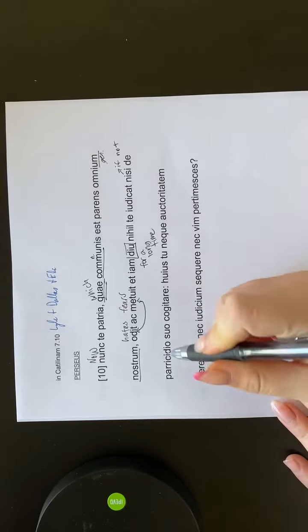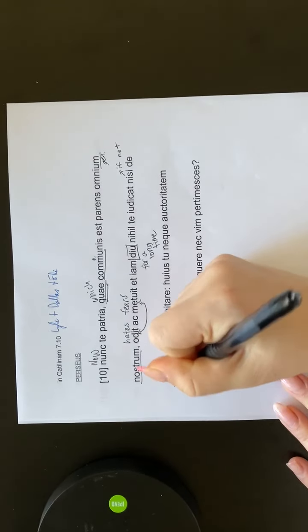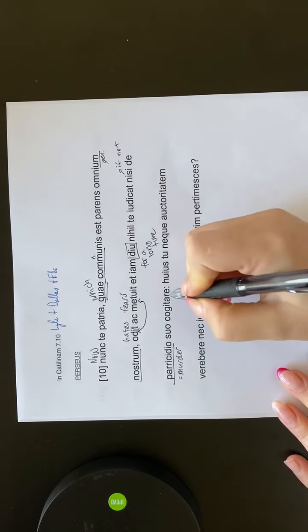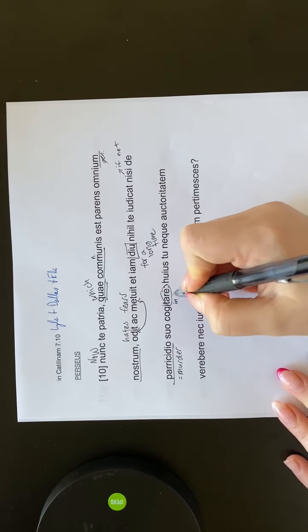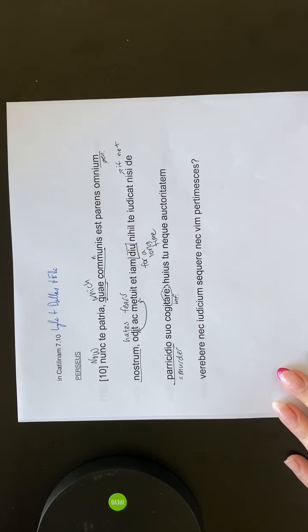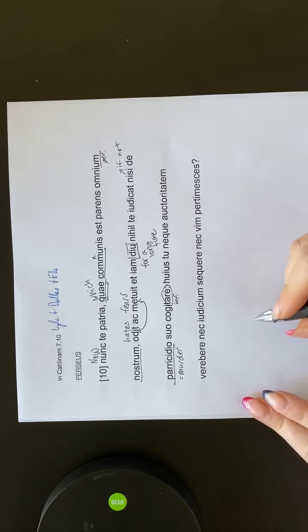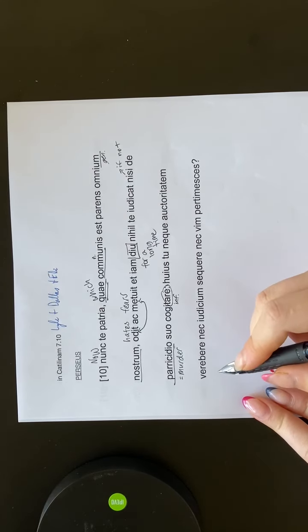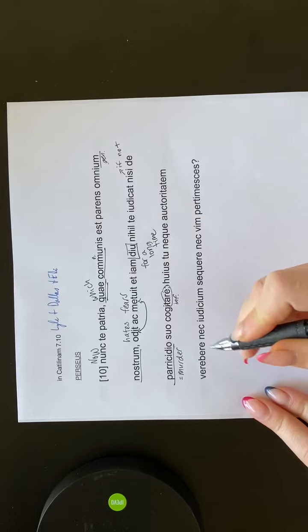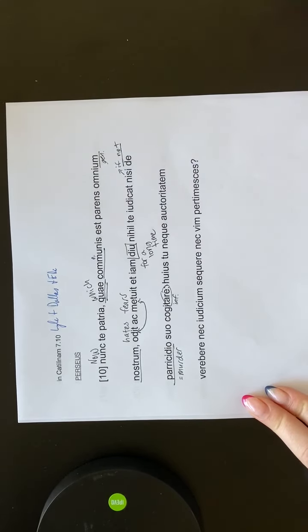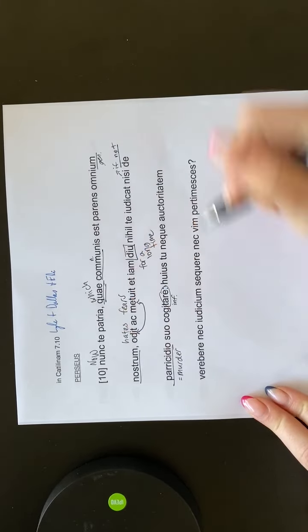So it's going to be, Odit ak metuit is hate and fears you, and then there's going to be a comma there, and then et iam diyu will be and now for a long time. Then you'll go to, it thinks that you think about nothing, if not about its own murder. So it's a bit confusing there to follow along, but figure it out.